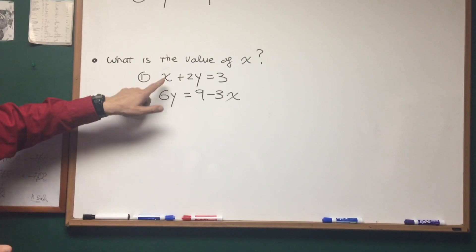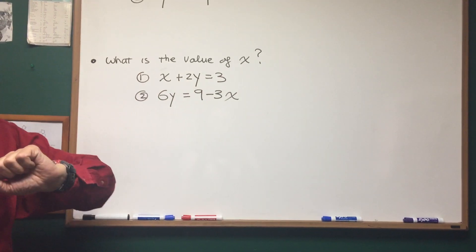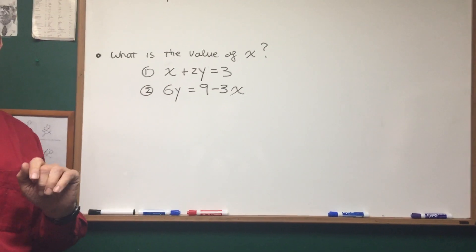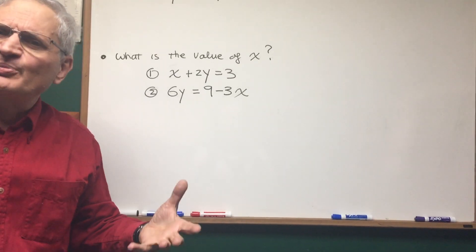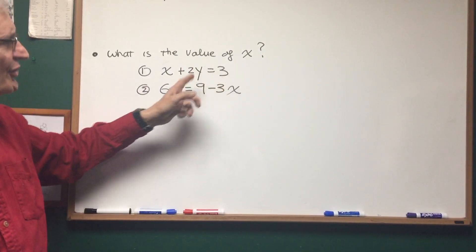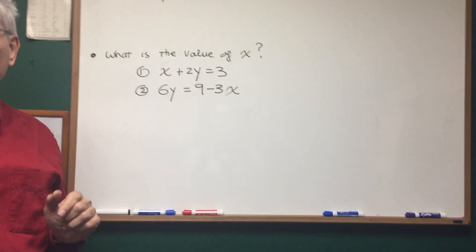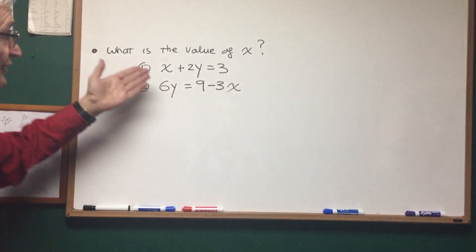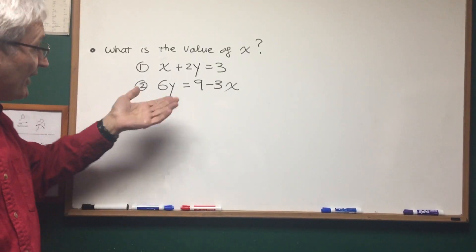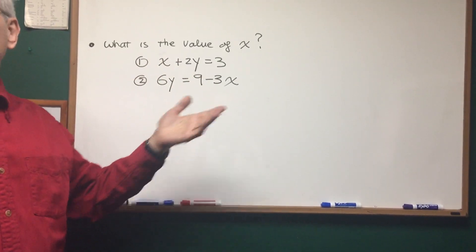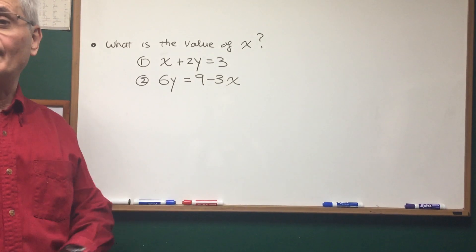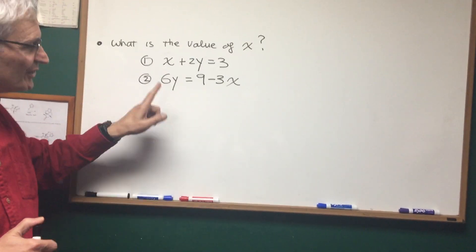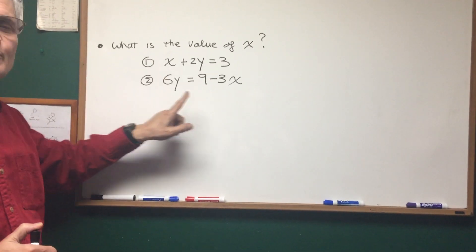What is the value of x? Statement 1: x plus 2y is equal to 3. And statement 2: 6y equals 9 minus 3x. Well, just on principle, if we have two unknowns and two independent equations, the problem is totally solvable. So, if we first look at this, our first blush, we say, oh yeah, two equations, two unknowns, we can solve for x. Simple. But, there's a little twist to this problem.